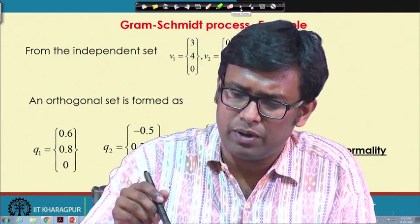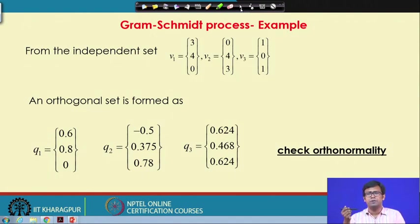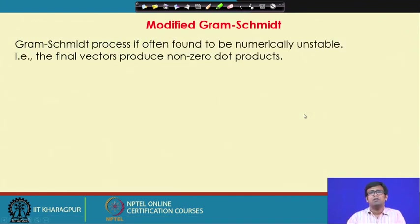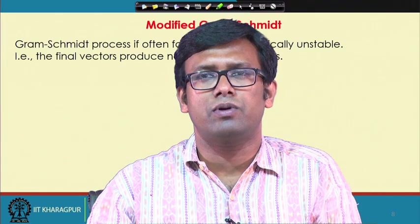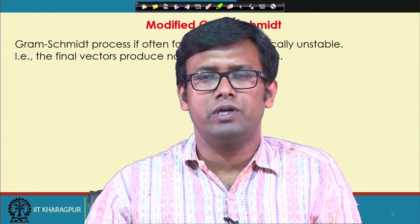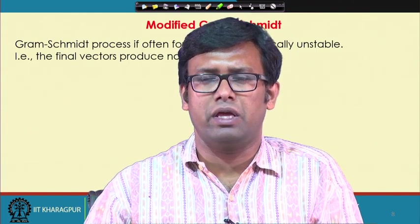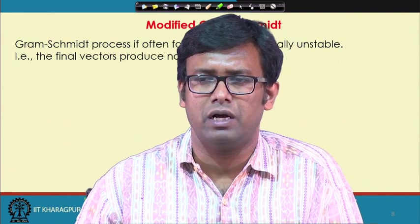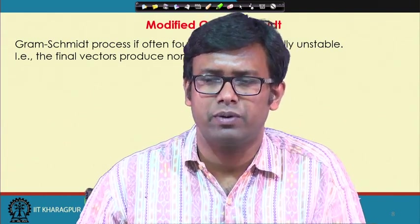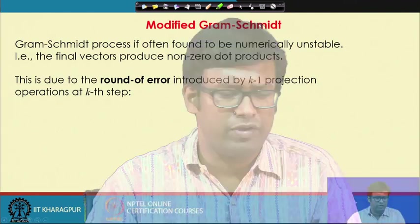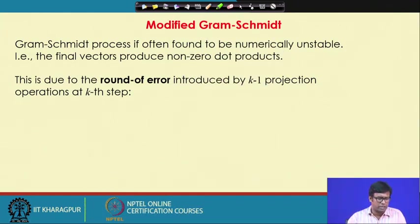However, when we try to implement this in a computer program, there are issues. The Gram-Schmidt process is often found to be numerically unstable — when we check orthonormality of the final vectors, their dot products are often nonzero. The formulation is mathematically sound, but there is a round-off error introduced by k−1 projection operations at the kth step.